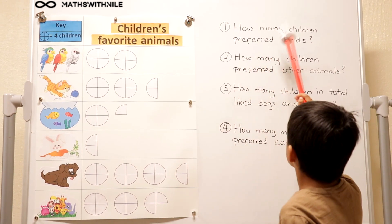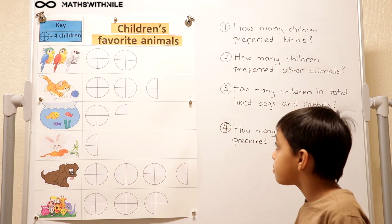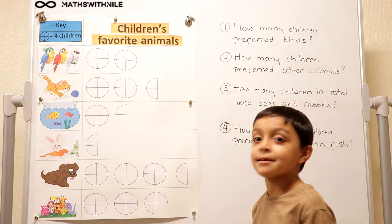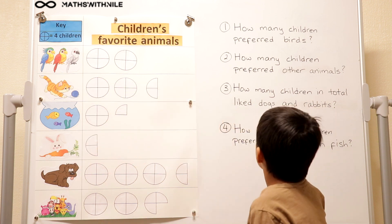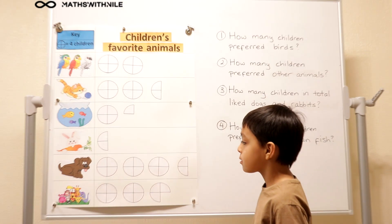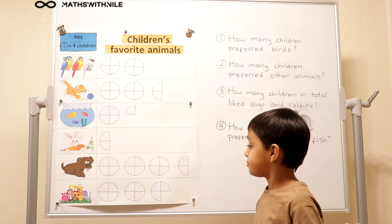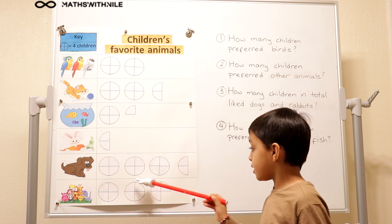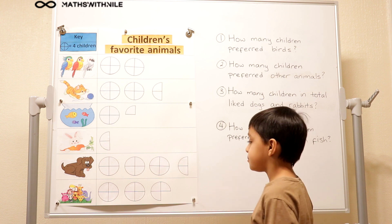It says how many children preferred birds? Four, eight — because four plus four equals eight. Good. One of those circles equals four, as we've just been told by the key. What about question two — how many children preferred other animals? Eight, nine, ten, eleven. One, two, three, four, five, six, seven, eight, nine, ten, eleven. So we've got three in that last one — 11 in all.